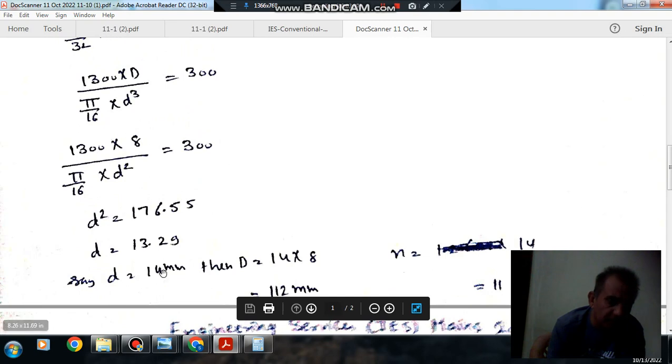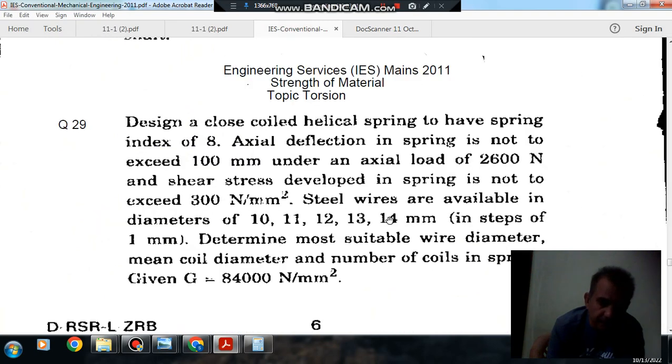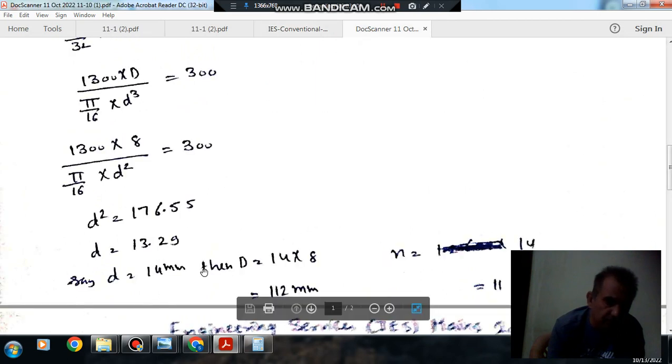As it is given that steel wire in diameters of 10, 11, 12, 13, and 14, so this is 14 mm. And as spring index is 8, so mean coil diameter will be 14 times 8, that is 112 mm.